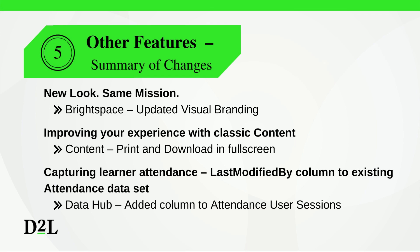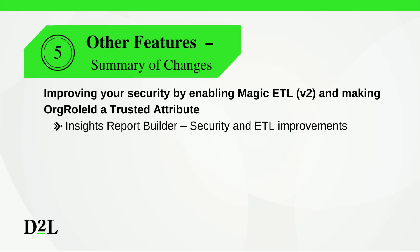Finally, let's take a quick look at the other features for this month's release. Brightspace is getting new visual branding to better reflect who we are today and will be in the future — we'll be updating default logos and icons over the coming releases. Classic content is getting print and download buttons visible in full-screen view. DataHub is adding the last modified by column to existing data sets, allowing you to capture learner attendance more effectively. And lastly, upgrading and improving security by enabling Magic ETL version 2 and making org role ID a trusted attribute in Insights Report Builder.